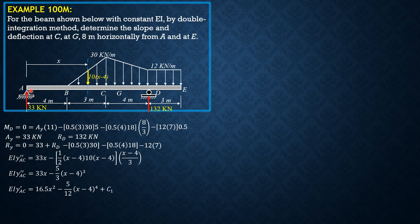Take note that when X is 0, Y is 0 at A, so there is no C₂. Integrating again: EI Y_AC equals 5.5X³ minus (1/12)(X minus 4)⁵ plus C₁X.